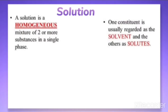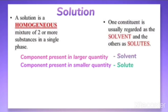How can you identify the solute and solvent in a solution? The component which is present in the larger quantity is called the solvent, and the component which is present in the smaller quantity is called the solute. Depending upon the number of components, we can classify solutions into different types.